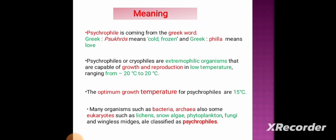Many organisms such as bacteria, archaea, and some eukaryotes such as lichens, snow algae, phytoplankton, and fungi are classified as psychrophiles.